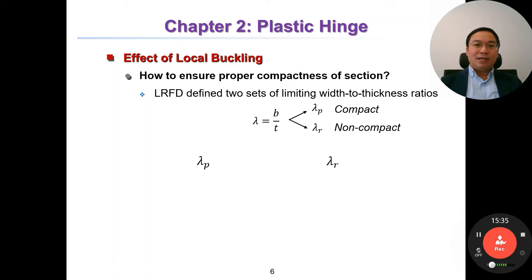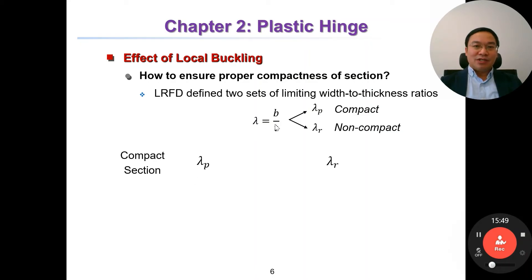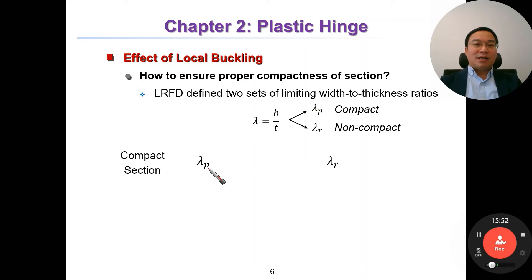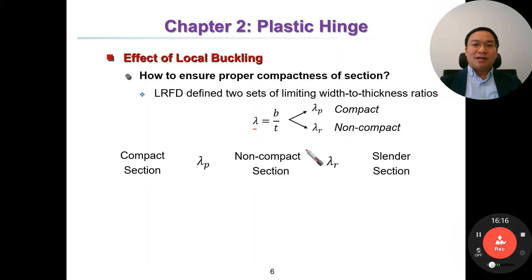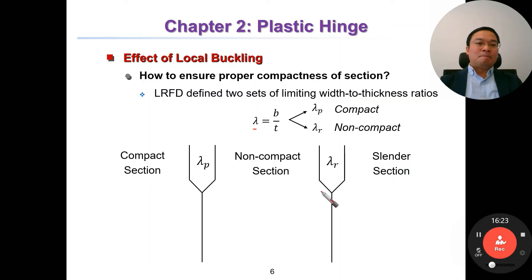For the I-section, due to axial force (action force), the plastic neutral axis is not in the middle of the section — it moves. As a result, the stress in the section can be divided into two parts: one part due to moment and one part due to axial force. The axial force shifts the plastic neutral axis.